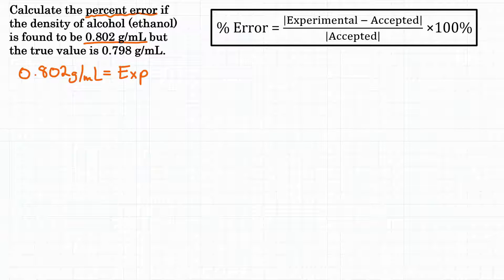So that 0.802 grams per milliliter is what we call our experimental value, abbreviated as EXP. And then we were also given 0.798 grams per milliliter which is the true value. So the 0.798 grams per milliliter is what the density actually is. Sometimes it's called the true value. I like to call it the accepted value, abbreviated as ACC.